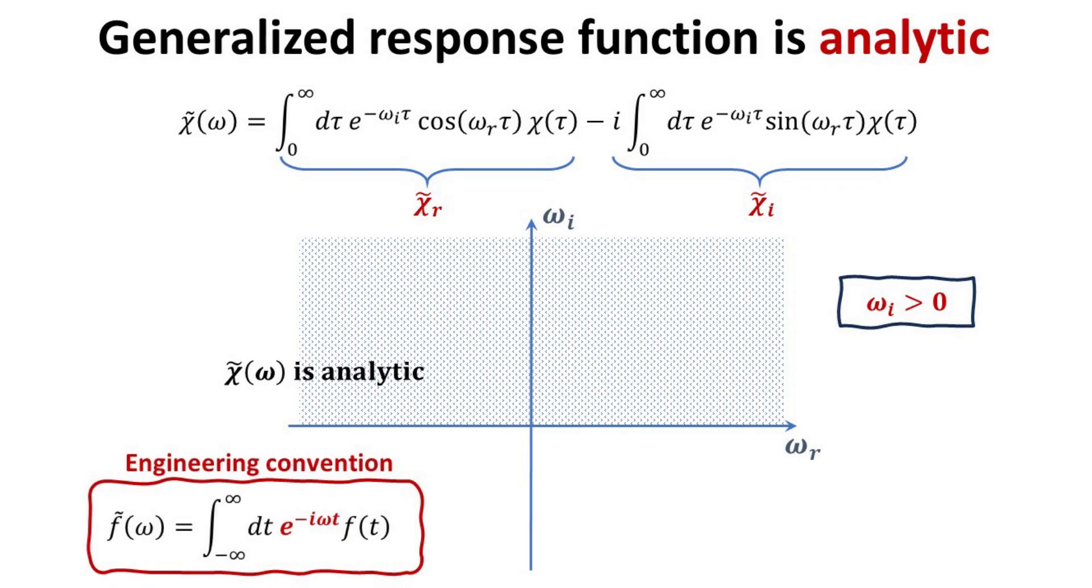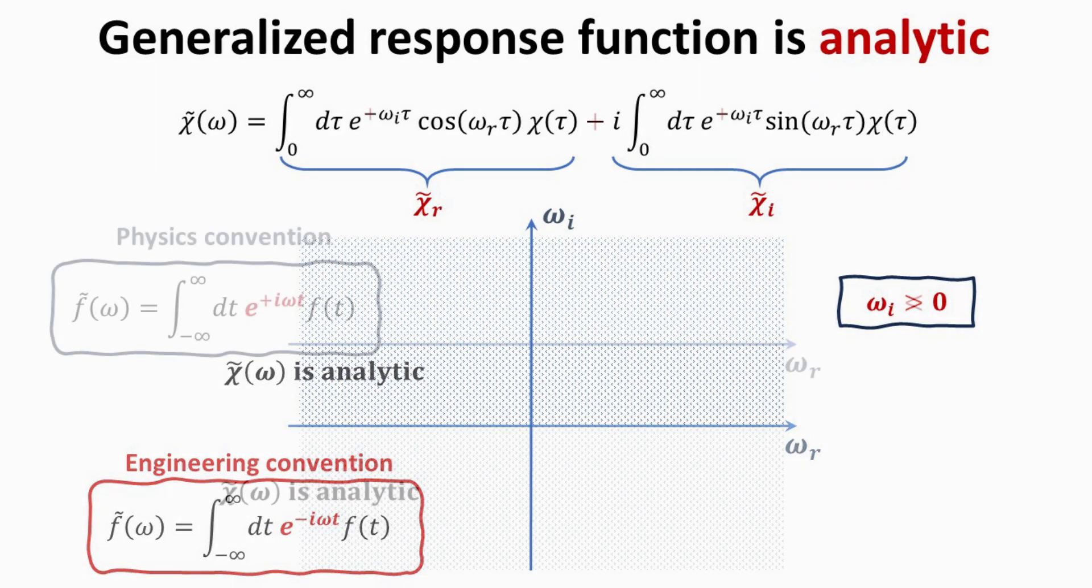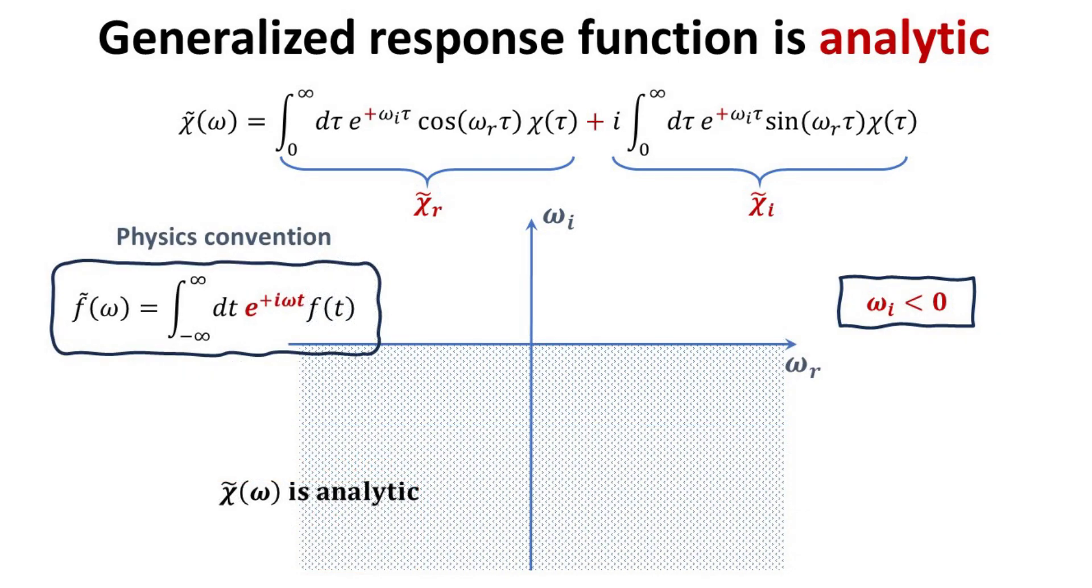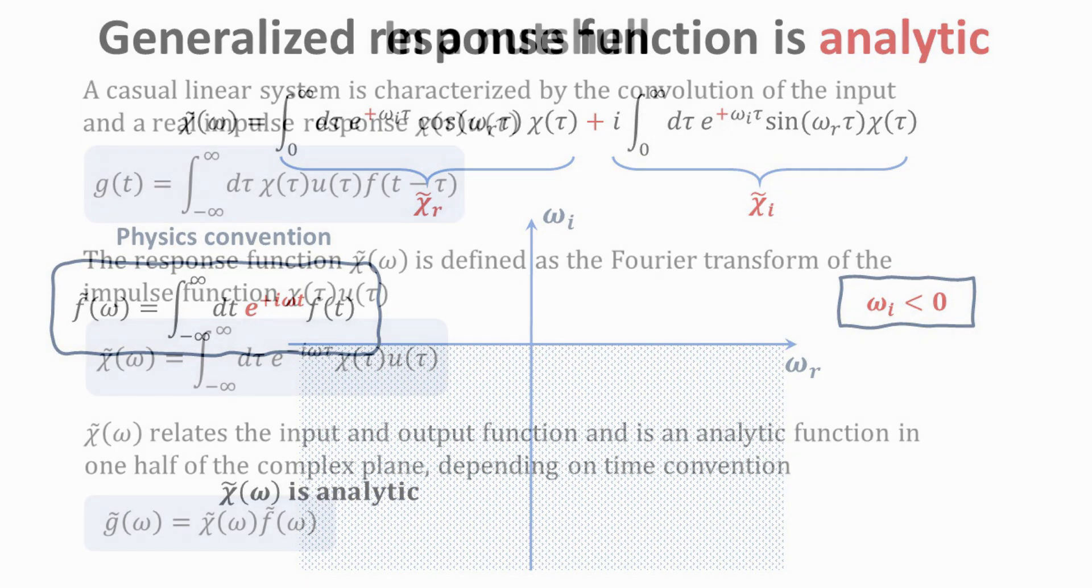Note that we have derived this result with our choice of the engineering convention in Fourier transform. If we had chosen the physics-Fourier transform convention instead, then omega i would have to be negative for the generalized response function to be analytic. These conventions are also known as time conventions in the literature and can often be a source of confusion.